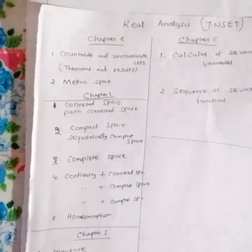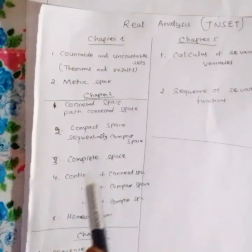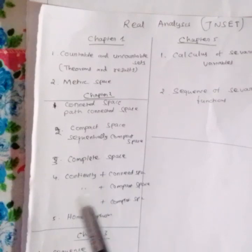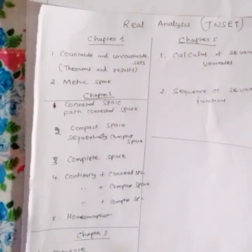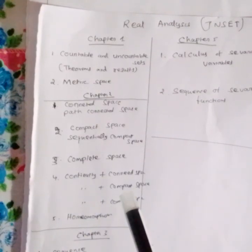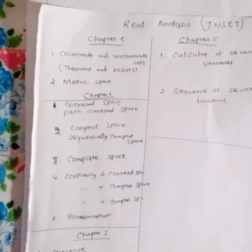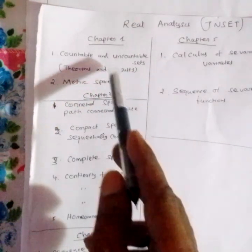Next: limit point, isolated point, interior of your point. Open set, closed set, perfect set, dense set — and other stuff, parallel in the system.